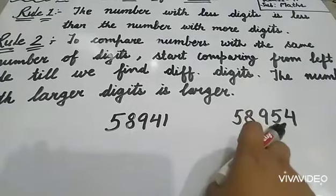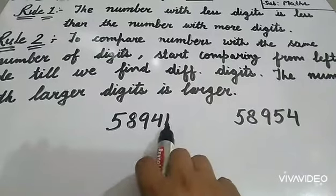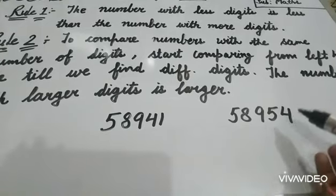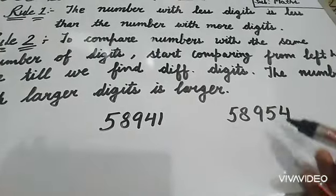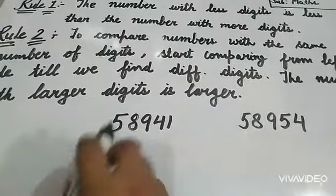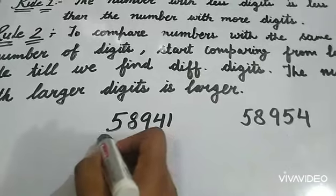We have two numbers here. First is 58,941 and the second one is 58,954. Now we have to compare these two numbers. How will you compare? Earlier we discussed, always start from the left side. That means first we have to compare the number of digits.